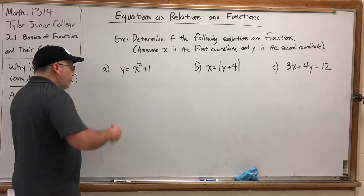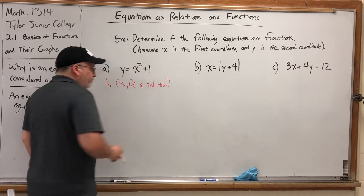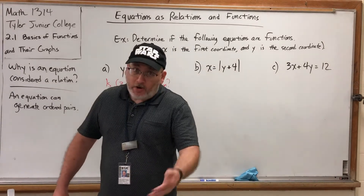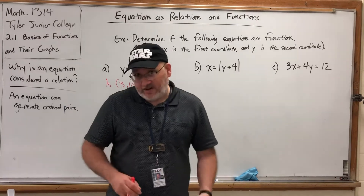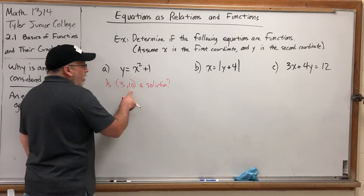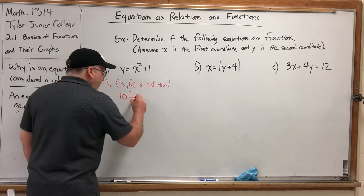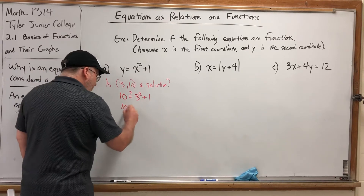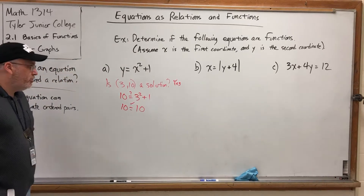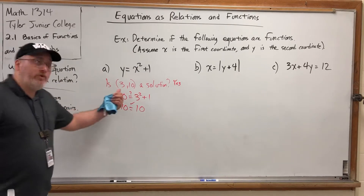For example, is (3, 10) a solution to this equation? Assuming that x is the first coordinate and y is the second coordinate — which we will always assume — we're asking: can we substitute 3 for x, 10 for y, and get the same thing on both sides? If we put in 10 for y and 3 for x, 3 squared is 9, plus 1 is 10. So yes, (3, 10) is a solution to the equation y = x² + 1.